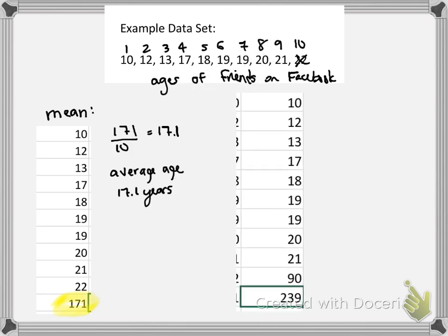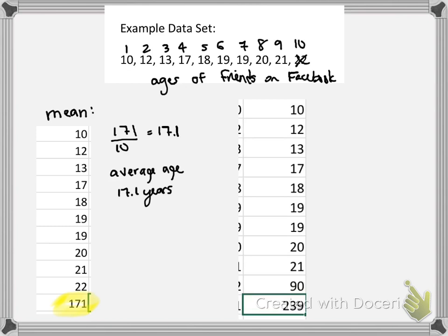In this case, I made the value 90 because I wanted it to be an extreme value. If you want to use your imagination, you can pretend this is like your grandma or some older relative who joined Facebook and friended you.